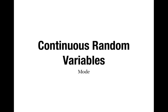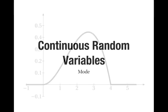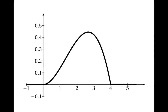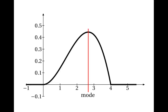This is a video about the mode of a continuously distributed random variable. Suppose that you're looking at the graph of the probability density function. The mode is the place with the highest probability density — it's the x-coordinate of the highest point on the graph.